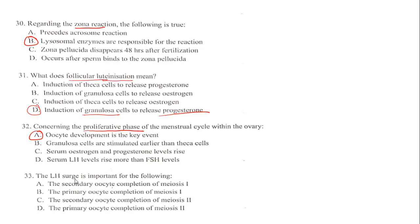The luteinizing hormone surge is important for: secondary oocyte completion — incorrect; primary oocyte completion of meiosis one; or secondary oocyte completion of meiosis two. The only correct answer is the primary oocyte completion of meiosis one. The menstrual cycle is one of the important topics every student needs to know.